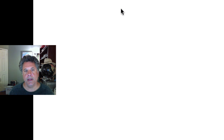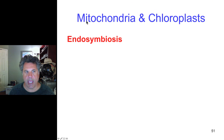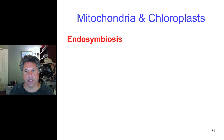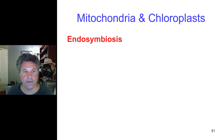This brings us to the concept of the evolution of the eukaryotic cell and the origin of mitochondria and chloroplasts. The theory that describes their origin is endosymbiosis — mitochondria and chloroplasts are endosymbionts. They became symbiotic with another type of cell, and together that symbiosis led to the formation of what we call a eukaryotic cell.